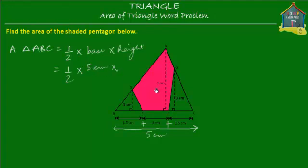So the base is 5 centimeters. How about the height? Well the height is quite clearly given. It's 4 centimeters. So we put that down here, 4 centimeters. And from here what we get is the area of triangle A, B, C which is 10 centimeters square. So that's the area of the big triangle.